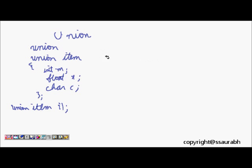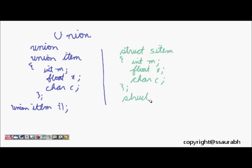Similarly, if we had parallely a structure also, let's say we define struct s item s1. Now let's see what will be the difference. Let's assume we had int m, float x, and char c, and we defined struct s item s1.